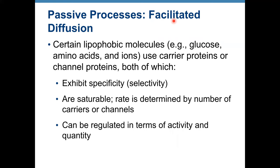Facilitated diffusion — what substances move by this process? Glucose, amino acids, and ions. They require either carrier proteins or channel proteins, or both. All these proteins exhibit specificity or selectivity. For example, if we have a channel protein for sodium, only sodium can move through that protein. So they are specific.